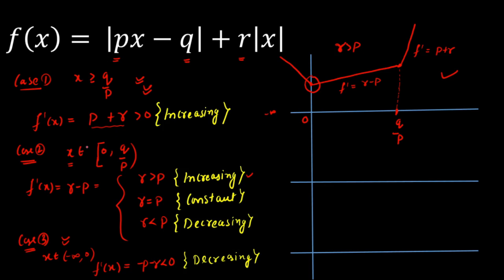Graph two considers r equal to p. From minus infinity to zero, it is decreasing. From zero to q over p, the function is constant since f'(x) equals zero. Beyond q over p, it increases with slope p plus r. Since the function is constant from zero to q over p, it attains its minimum value over an entire interval, not at a single point. This case is therefore rejected.